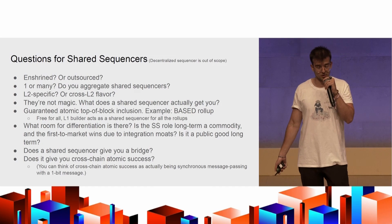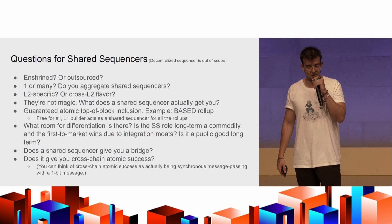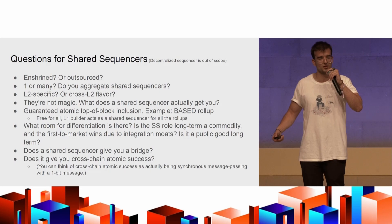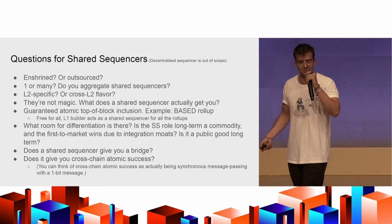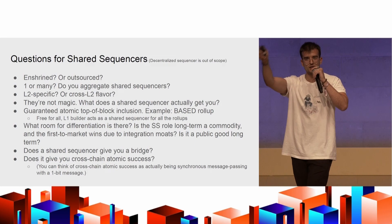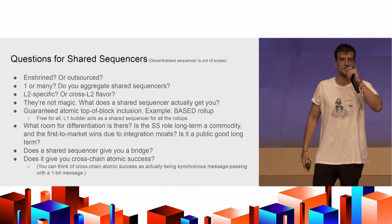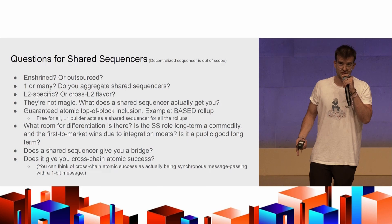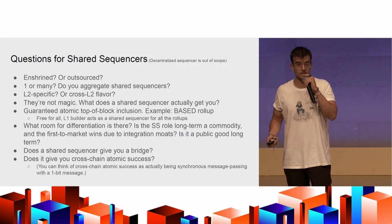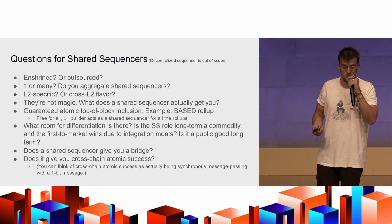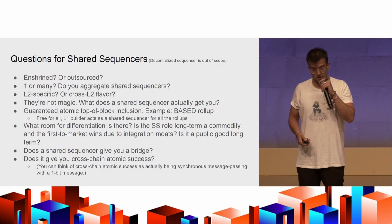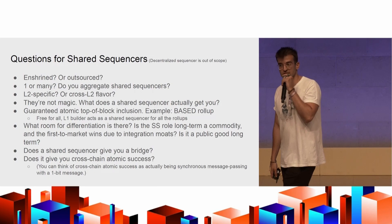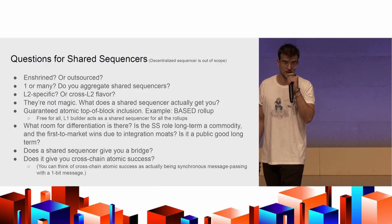The point I want to drive home: shared sequencers are not magic. They don't solve all the world's problems. They give you atomic top-of-block inclusion — the most classic example being the base rollup. What is the room for differentiation? I don't know, but neither does anyone else. There are also open questions around the bridge and atomic success, for which I've only seen strawman answers, and I think we should do better.